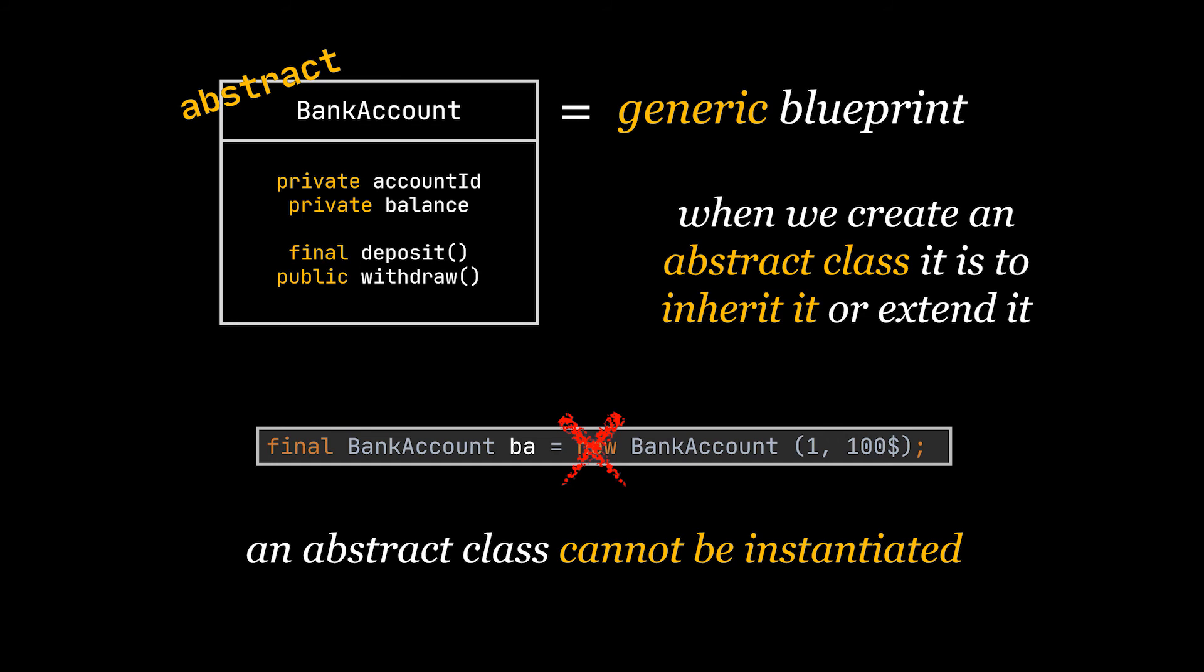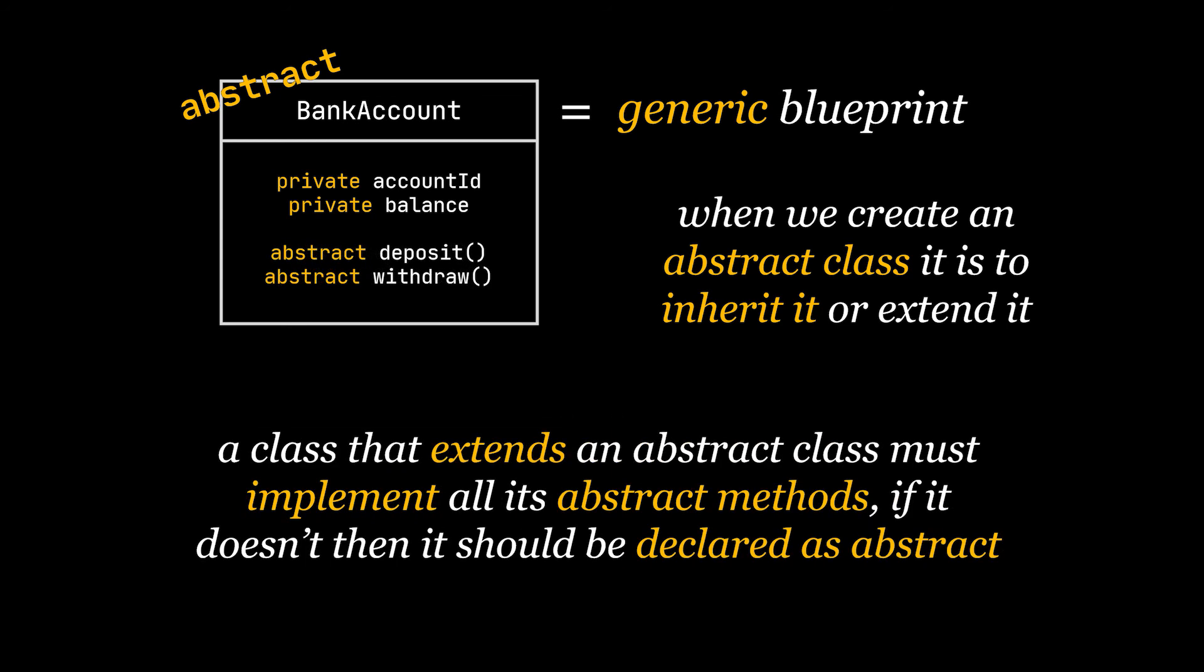These missing components, the bits and pieces, are defined in a class as abstract methods. And these methods must be implemented by a subclass of that abstract class, or else these subclasses must also be declared as abstract. Abstract methods are like rules - they are defined in the abstract class or the generic blueprint, but it is up to the child classes to implement them.